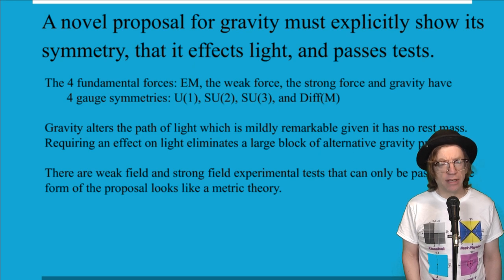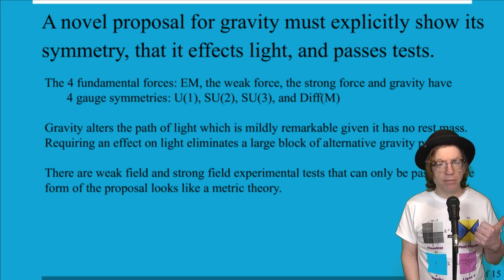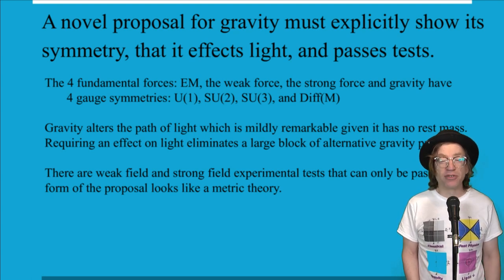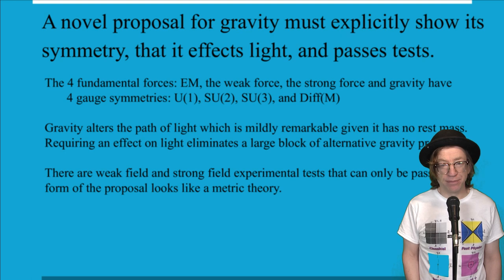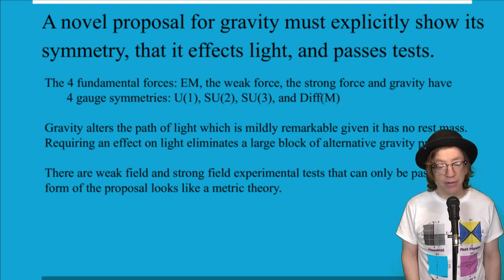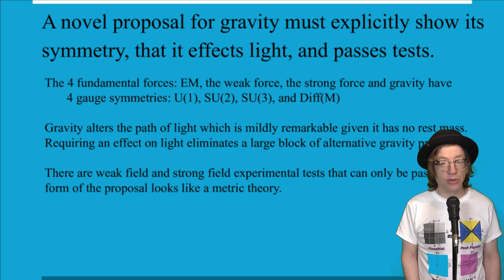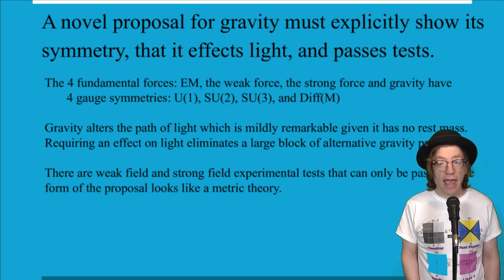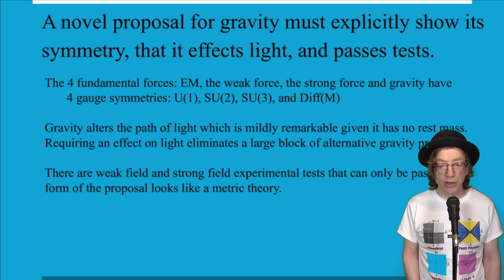The four fundamental forces of nature are EM, the weak force, the strong force, and gravity, explained by relativity these days. And those are gauge theories, and that means there's a gauge symmetry. For EM, it's U1, and that's a unit circle in a complex plane, so that's easy to visualize. There's SU2 for the weak force, and that is a unit quaternion.